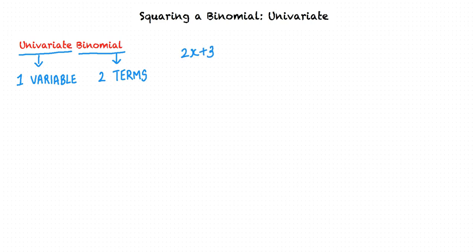2x plus 3, 5y plus 8, and 7z plus 21 are examples of univariate binomials.